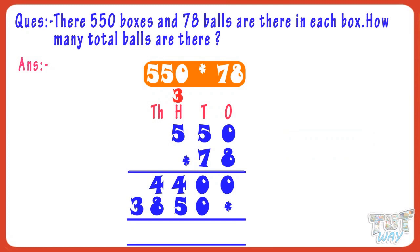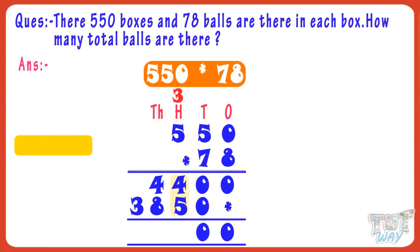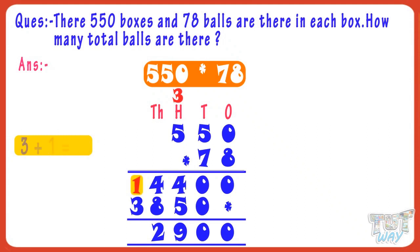Now add both products. 0 plus 0 equals 0. 0 plus 0 equals 0. 4 plus 5 equals 9. 4 plus 8 equals 12 — write 2 and carry over 1 to the next place. 3 plus 1 carry equals 4. 42,900 is the product of 550 and 78.